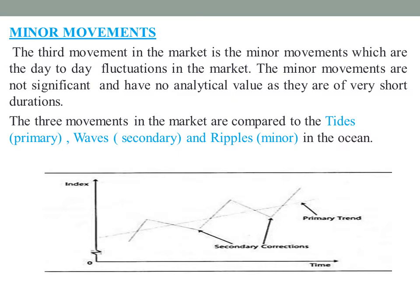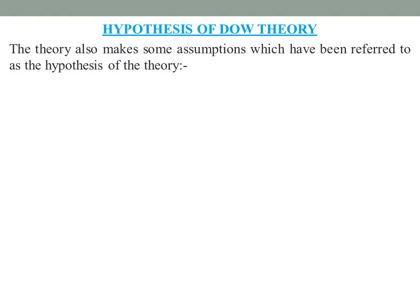The three movements in the market are compared to the tides, waves, and ripples in the ocean. The theory also makes some assumptions which are referred to as the hypothesis of Dow Theory.